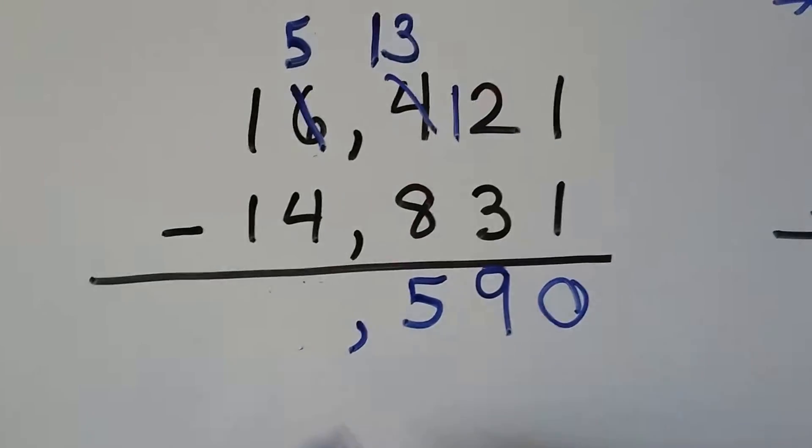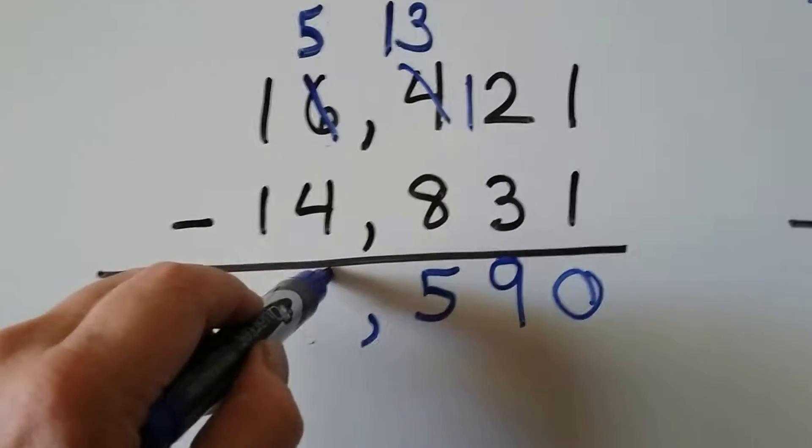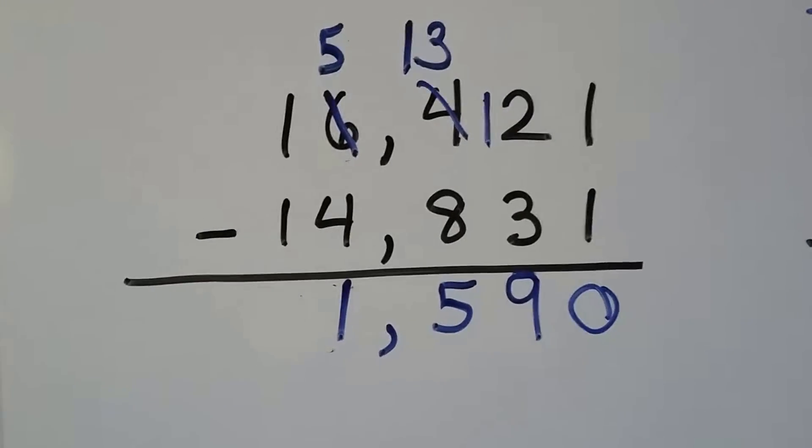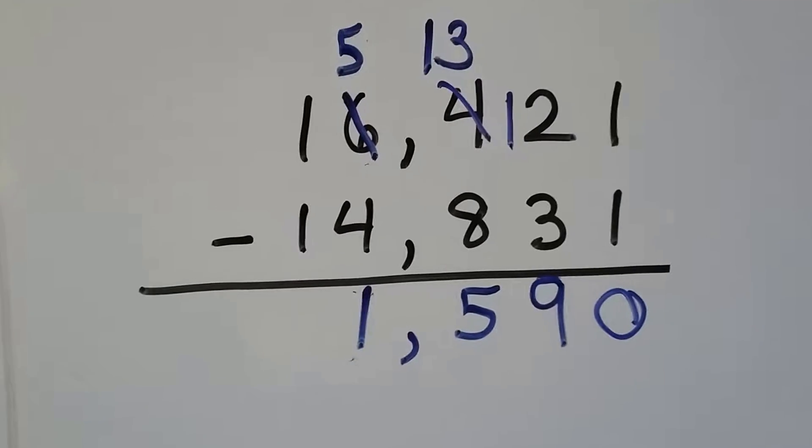We'll put our comma here. We have a 5 take away a 4. That's a 1. And we have a 1 take away a 1. That's a 0. So our difference is 1,590.